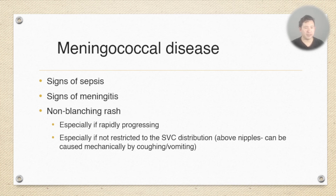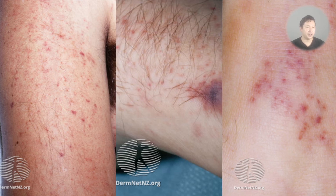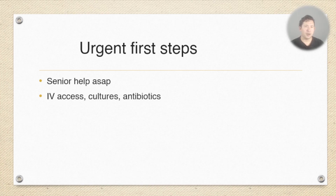If you've got petechiae below the level of the nipples, or a rapidly spreading widespread non-blanching rash especially on the trunk, you've got to take that really seriously. Here are a few pictures from DermNet of petechiae from meningococcal sepsis — the images are from adults as pediatric images are copyrighted. You're looking for little dots of red blood in the skin that don't blanch when pressed, and sometimes these join together to form purpura, as seen in the middle picture.